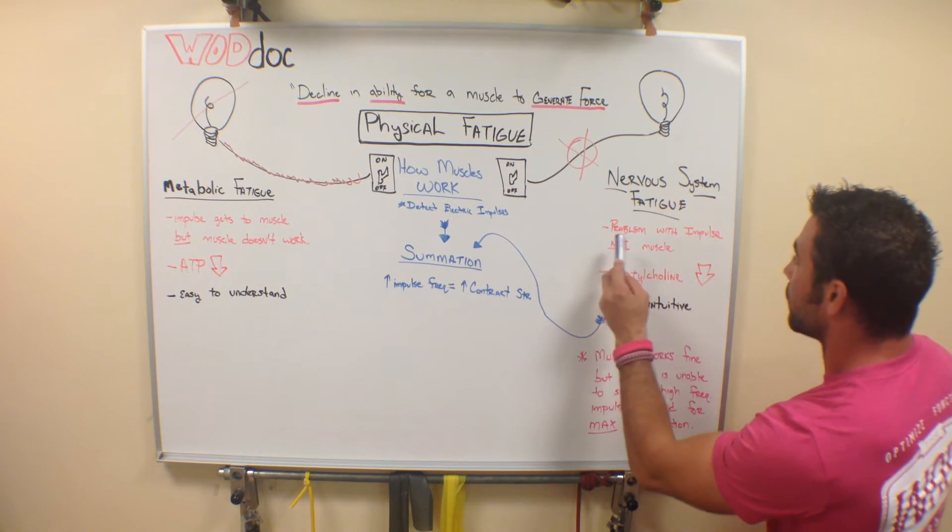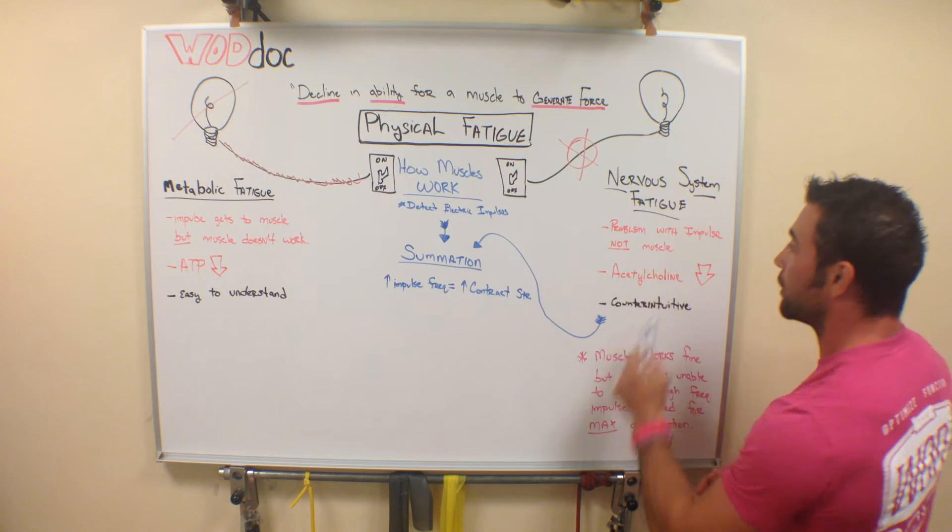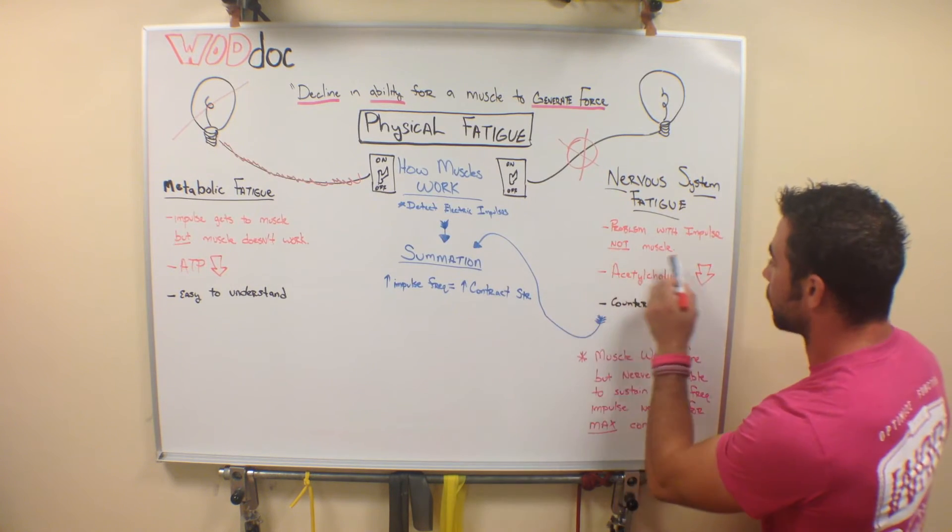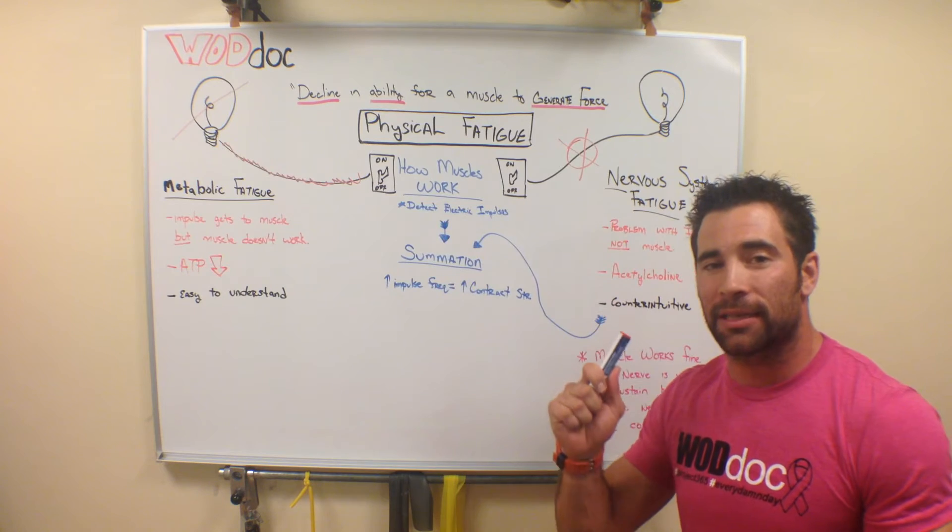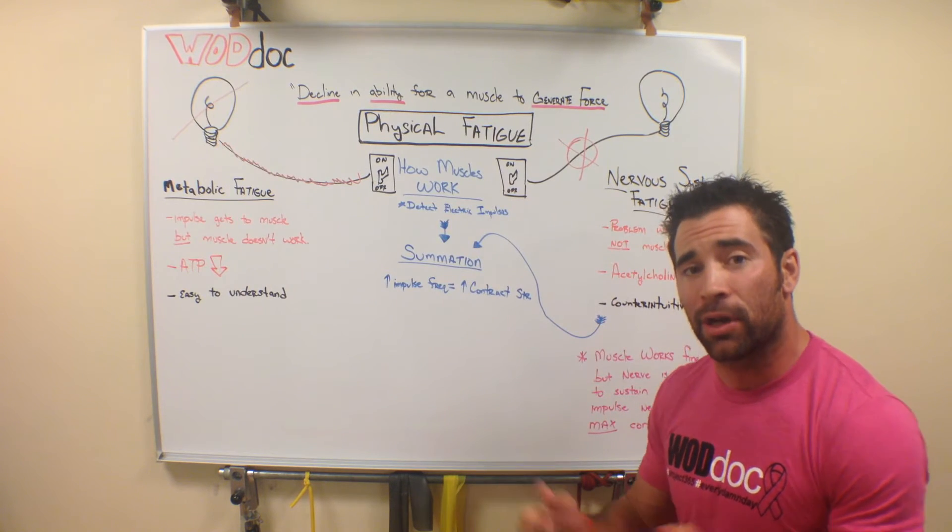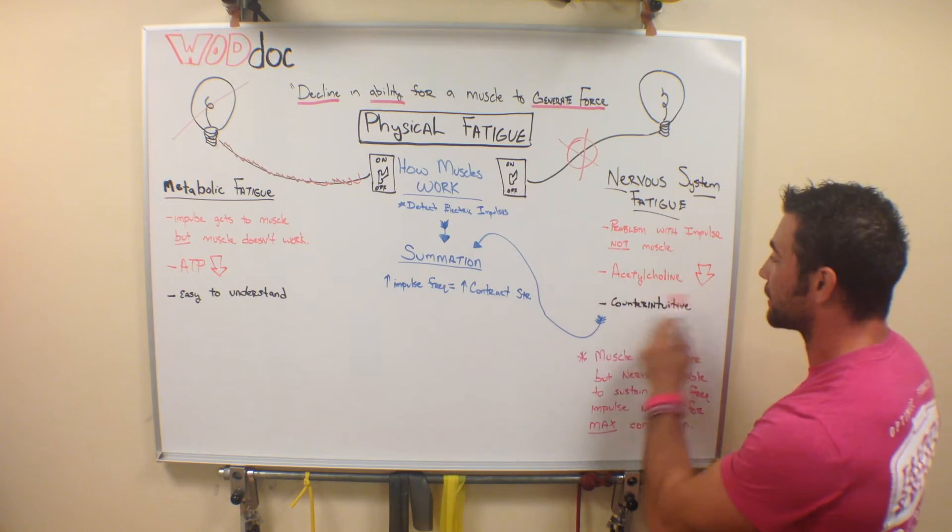So as we said, we have a problem with the impulse, not the muscle. That's normally due to acetylcholine. Acetylcholine is the number one transmitter. It's a major neurotransmitter in the body that turns on muscle.